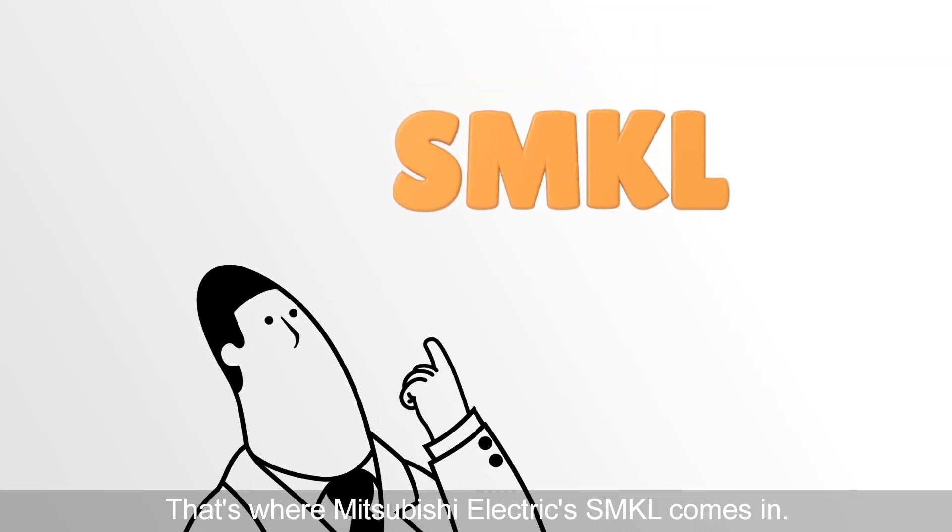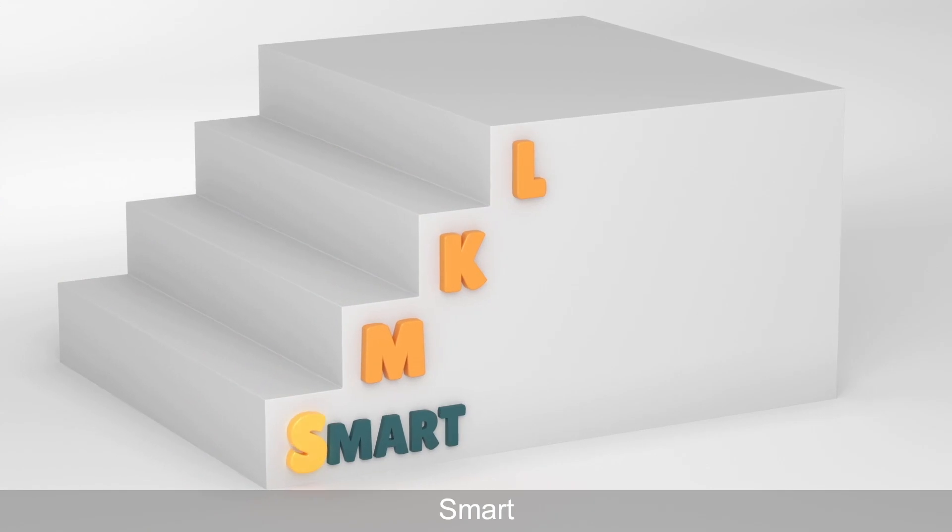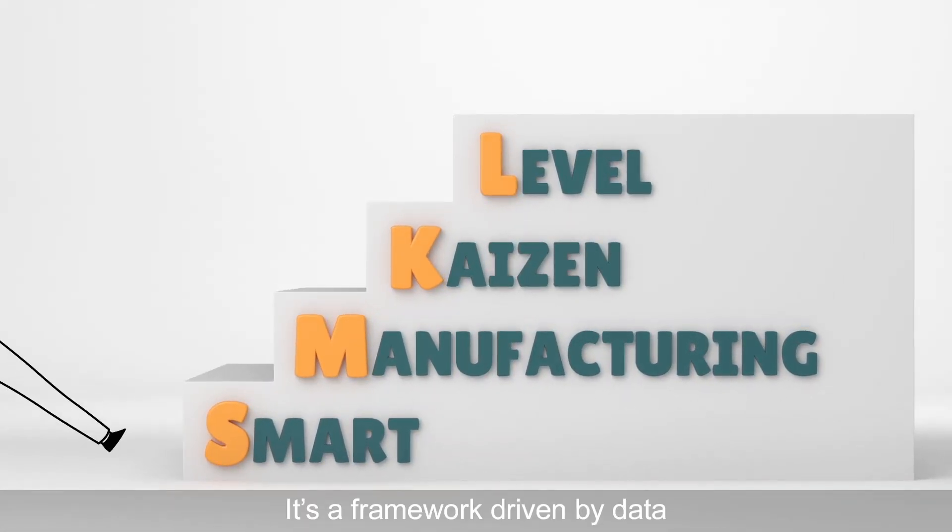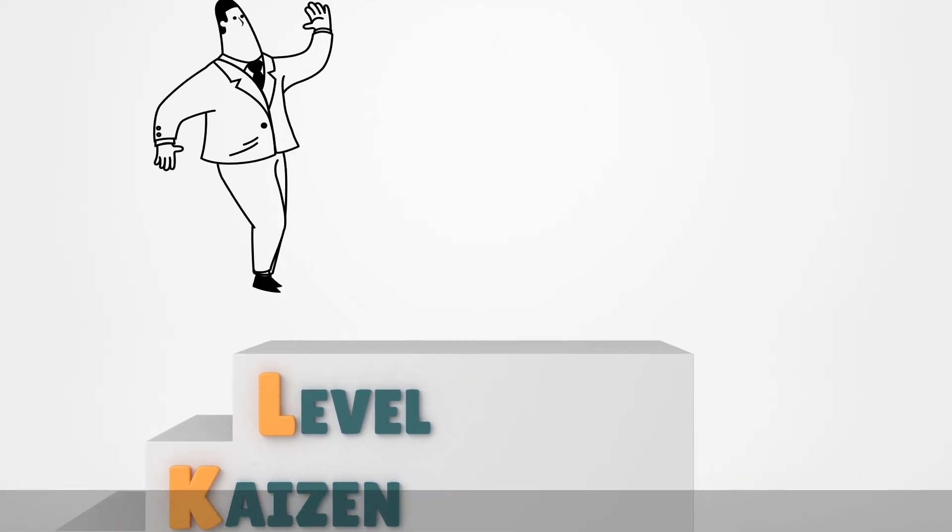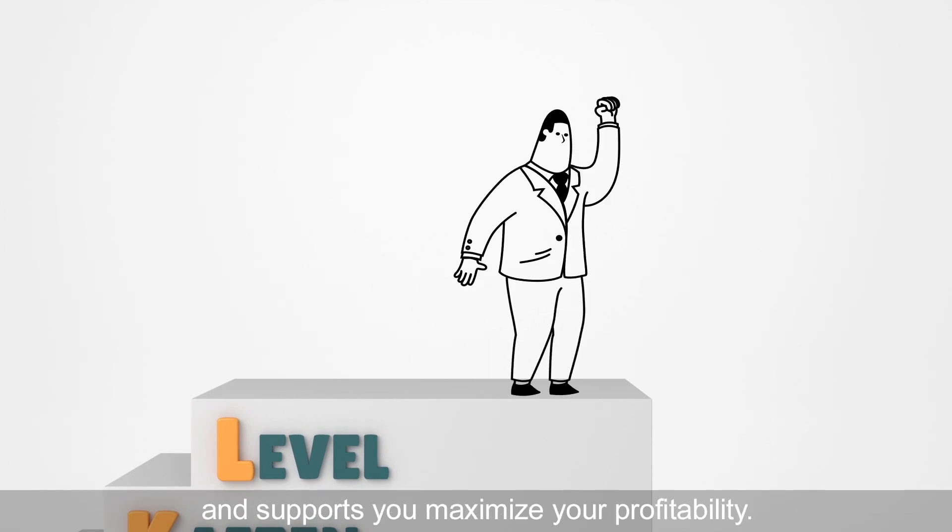That's where Mitsubishi Electric's SMKL comes in. SMKL is short for Smart Manufacturing Kaizen Level. It's a framework driven by data that understands what's happening in your factory. It identifies issues, helps to improve them, and supports you to maximize your profitability.